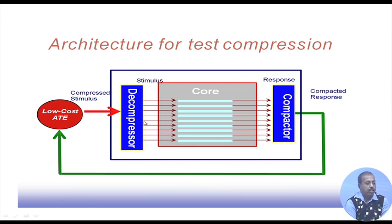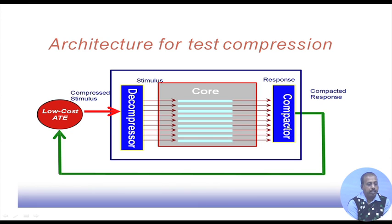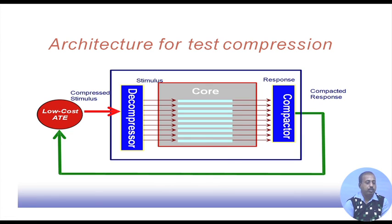In the ATE we store the patterns in a compressed form — the compressed stimulus. These come to the circuit, and before being applied to the circuit under test, they are passed through a decompressor stage. The decompressor converts the compressed stimulus into the actual stimulus. After the circuit gives its response, the outputs are collected by a response compactor, and the compacted response comes back to the ATE, which compares only against this compacted response.